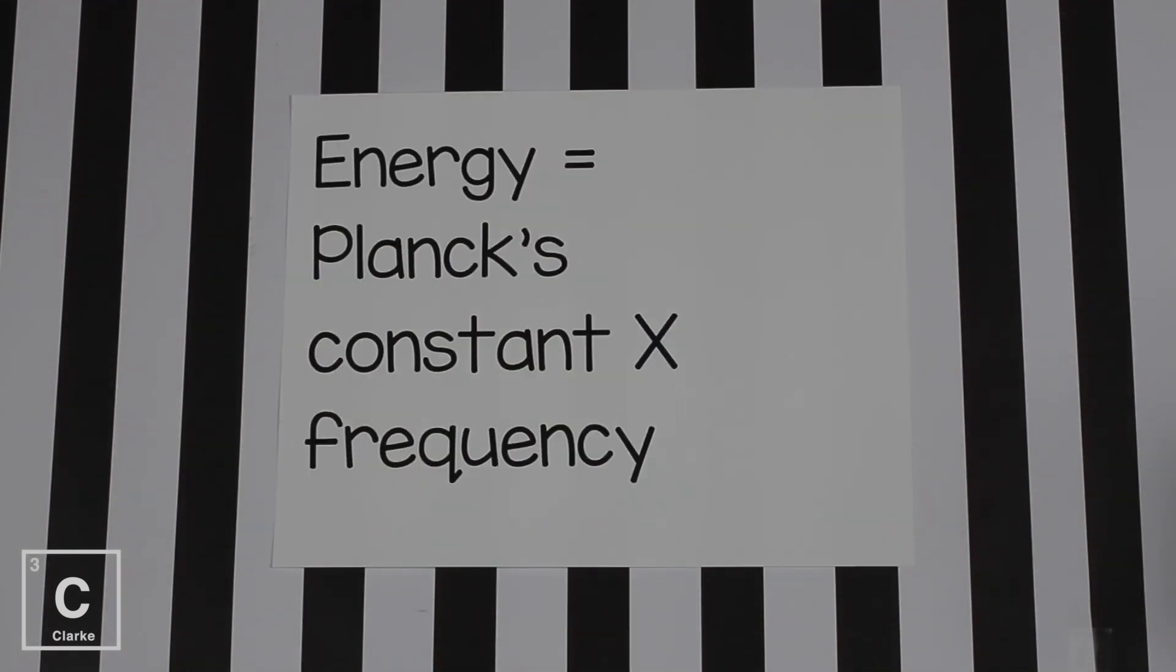Since we have a new problem, we have a new formula. Energy is equal to Planck's constant times frequency. And this is what that formula looks like. E for energy, H is for Planck's constant, and then we still have Greek letter nu for frequency.